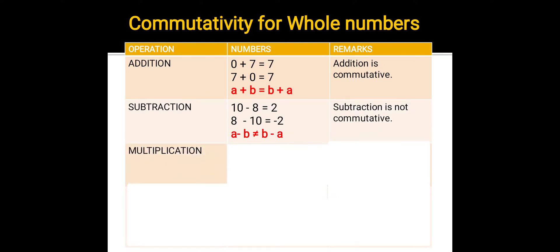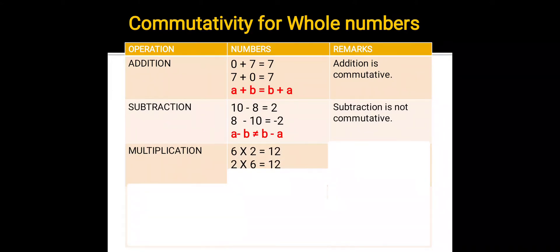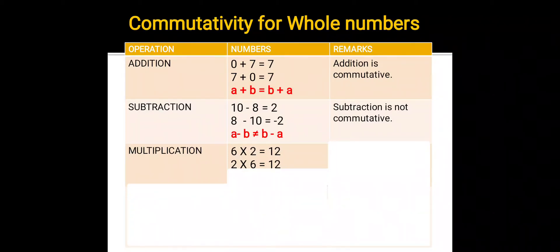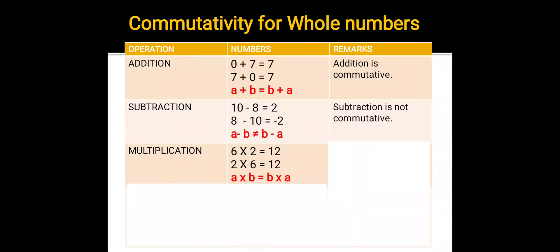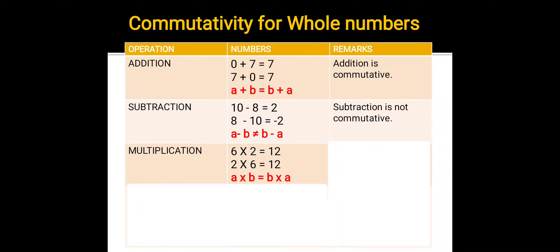Now let's check for multiplication. 6 multiplied by 2 equals 12. Whereas 2 multiplied by 6 also equals 12. Here too we can see that any two whole numbers when multiplied, the answer has not changed. Therefore, a multiplied by b equals b multiplied by a. Hence, multiplication is commutative.